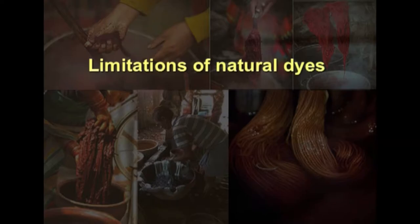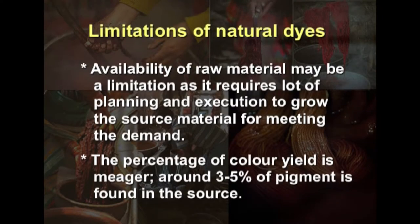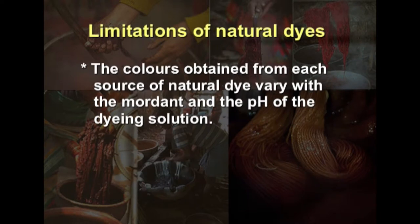Now let us see the limitations of natural dyes. The availability of raw material may be a limitation, as it requires a lot of planning and execution to grow the source material to meet the demand — agricultural land currently used for food production would need to be redirected for growing these natural dyes. The percentage of color yield is meager; around 3 to 5 percent of pigment is found in the source, so a lot of raw material is needed. The colors obtained vary with the mordant and the pH of the dyeing solution, and therefore skilled personnel are required to understand the complexity of the dyeing process.